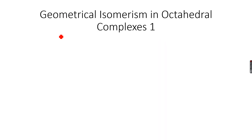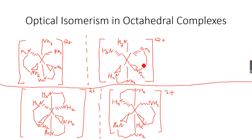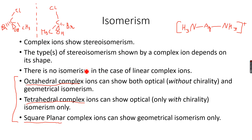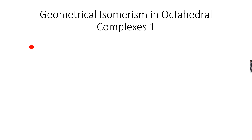There are three types of geometrical isomerism in octahedral complexes. Let's do the first one. I want you to remember: when we have two monodentate ligands and two bidentate ligands, we not only get optical isomers, we also get geometrical isomers. Let me draw this out.